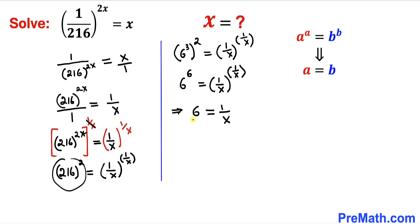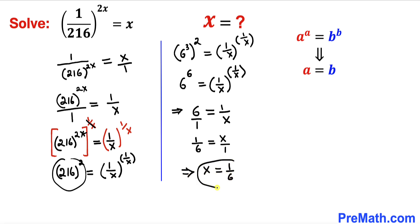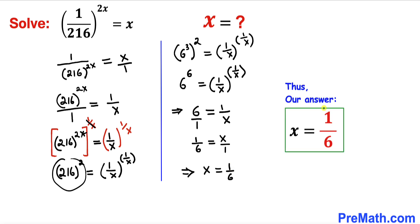6 can be written as 6/1. Let's go ahead and flip them over, so we get 1/6 = x/1. In other words, x turns out to be equal to 1/6. And that is our solution: x = 1/6.